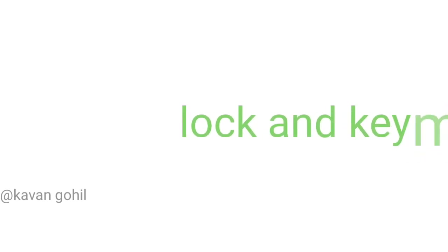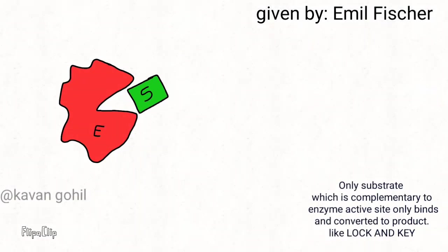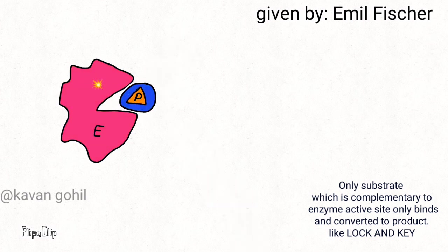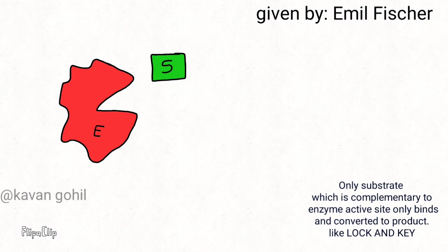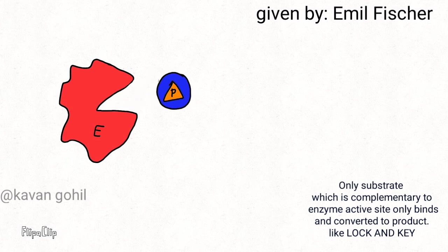Enzymes and their mode of action. The lock and key model was given by Emile Fischer. The substrate, which is specific to the enzyme active site, binds to the enzyme. After binding, the substrate is converted to product. This is like a lock and key, in which one key is only specific for one lock.